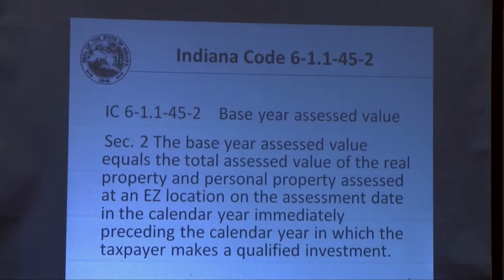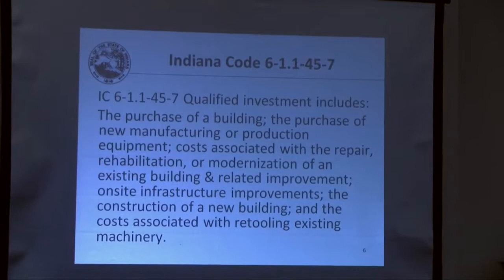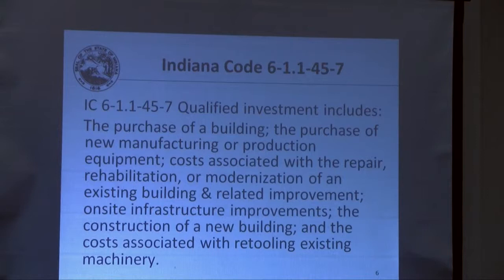Section 2 defines the base year assessed value as the total assessed value of real property and personal property assessed at an Enterprise Zone location on an assessment date in the calendar year immediately preceding the calendar year in which the taxpayer makes a qualified investment. A qualified investment includes the purchase of a building, purchase of new manufacturing or production equipment, costs associated with repair, rehabilitation, or modernization of an existing building, on-site infrastructure improvements, construction of a new building, and the cost of retooling existing machinery.